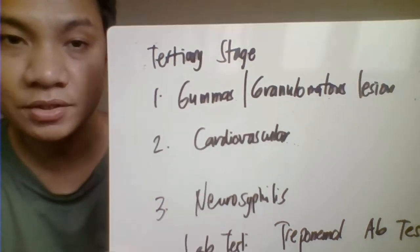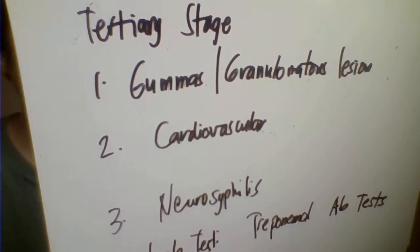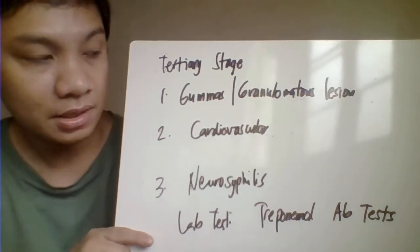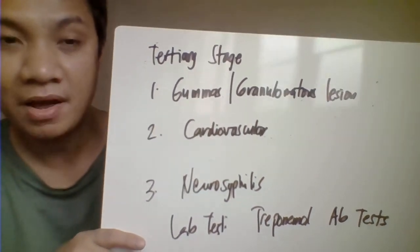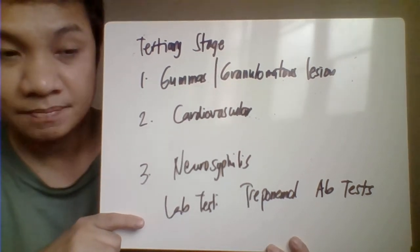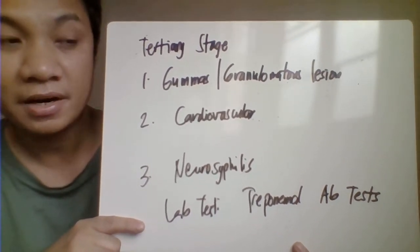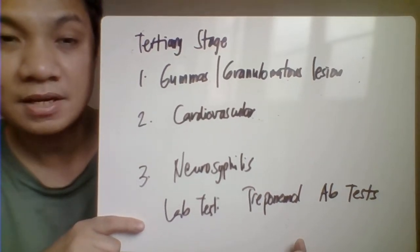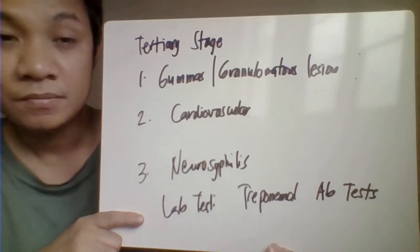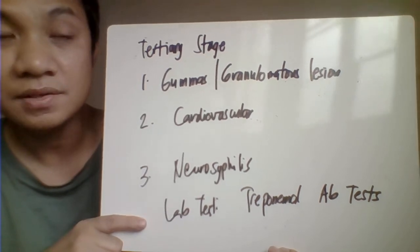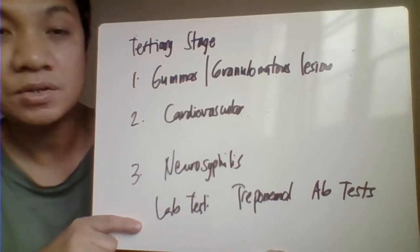The tertiary stage occurs 10 to 30 years after the appearance of the primary stage. It is divided into three manifestations. First is the granulomatous or gummatous lesion, which can affect the skin, bones, fibroblasts, and subcutaneous tissues. This lesion is characterized by aggregations of lymphocytes, epithelial cells, and fibroblasts, and can grow to several centimeters in diameter.